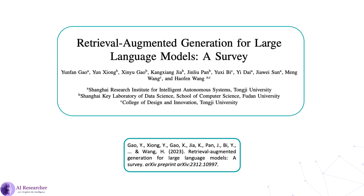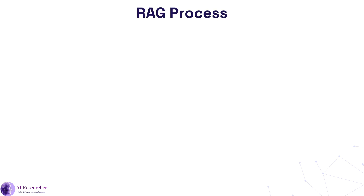Next, I found another interesting paper on RAG. It is a review paper. The paper name is 'Retrieval Augmented Generation for Large Language Models: A Survey'. It is from the Shanghai Research Institute, Shanghai Key Laboratory of Data Science, School of Computer Science, and College of Design and Innovation. Let us see what we have in this paper. Here we see the RAG process in the same architecture explained earlier but in a different format.